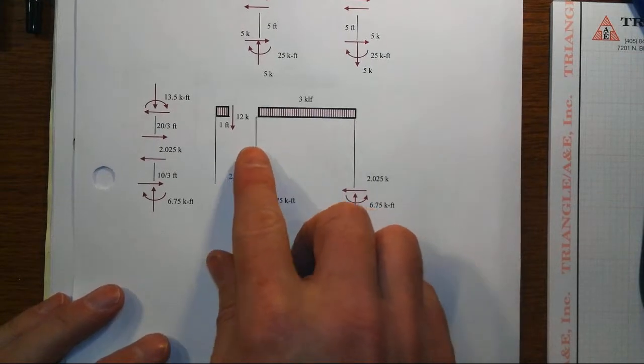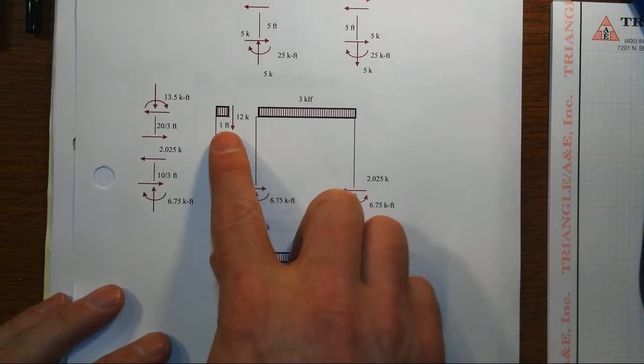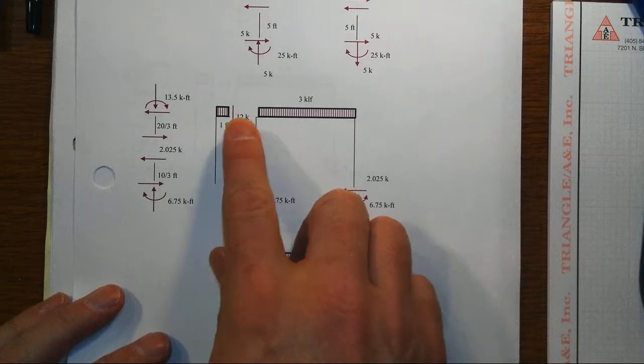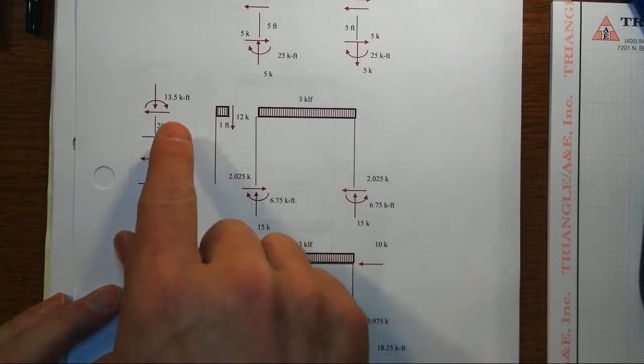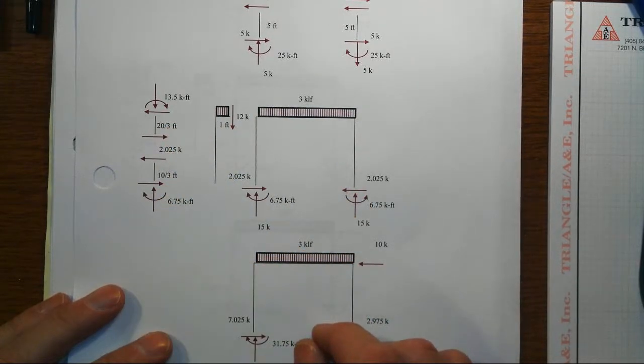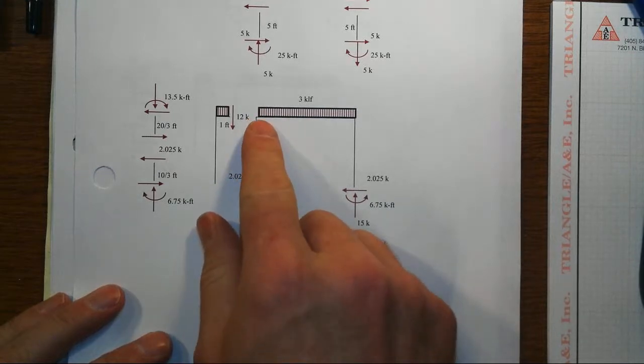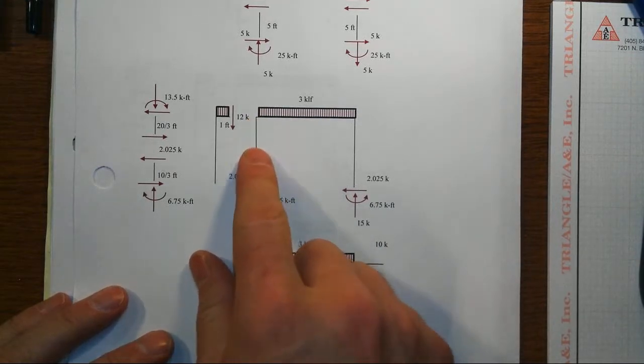For the gravity loads, we assumed the one-tenth rule, so one-tenth of 10 feet was one foot. We put the inflection point there and then went about doing the rest of our work.